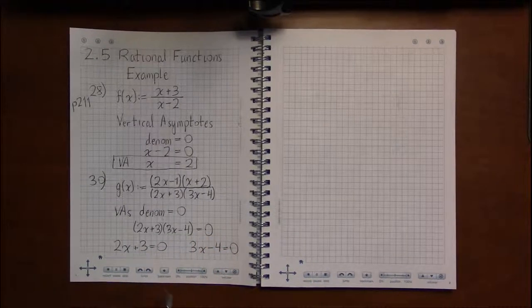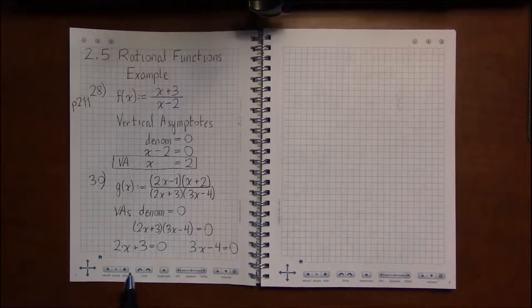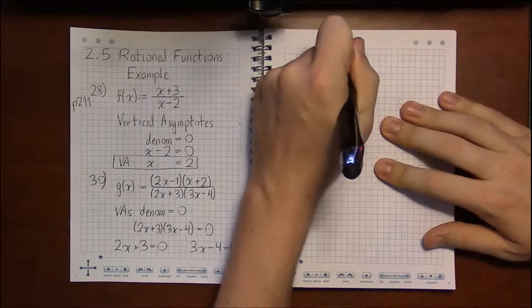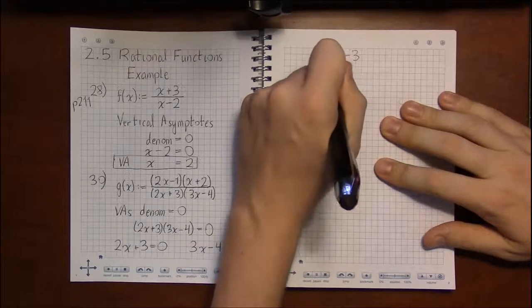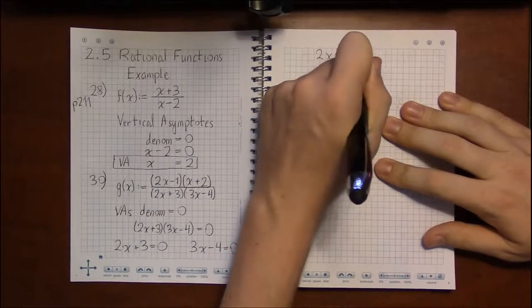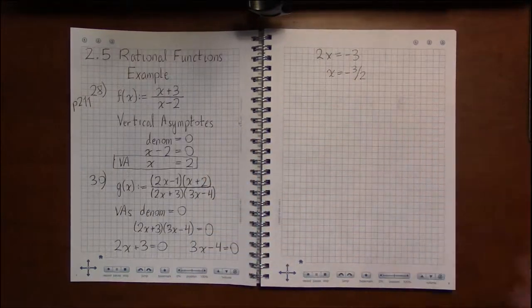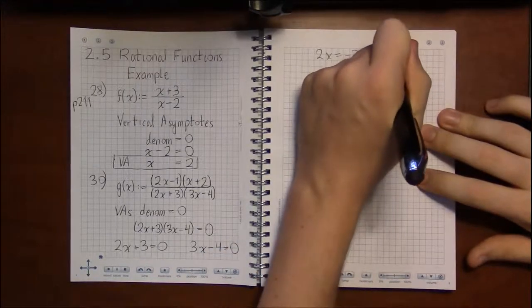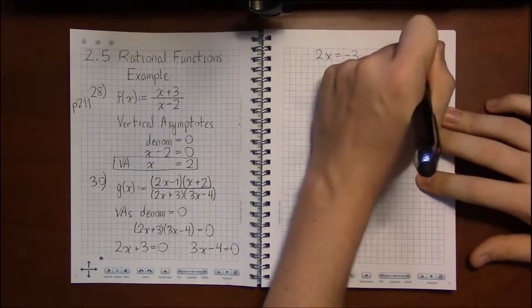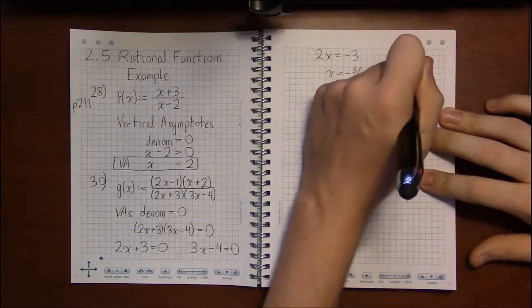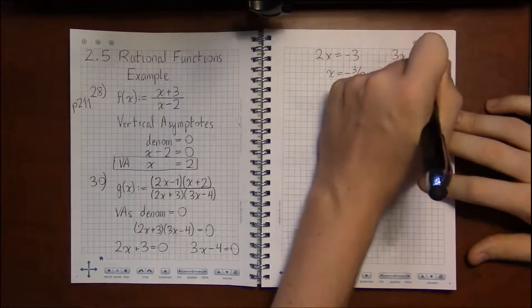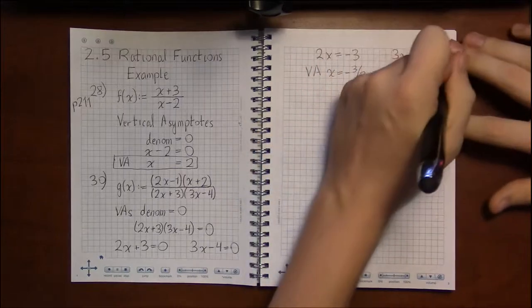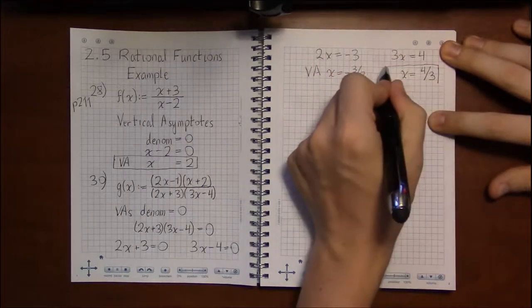On the first equation, we'll subtract 3 and then divide by 2. So we have 2x equals minus 3, then dividing by 2, we get x equals minus 3 halves. Then on the second equation, by adding 4 to both sides and then dividing by 3, we get x equals 4 thirds.